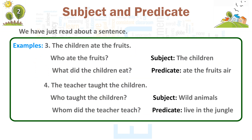Example 3: The children ate the fruits. Who ate the fruits? Subject — The children. What did the children eat? Predicate — Ate the fruits.